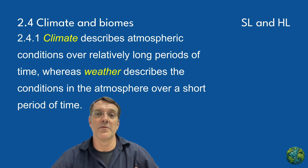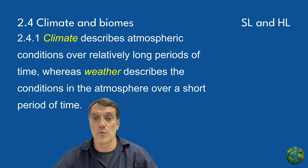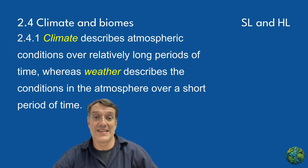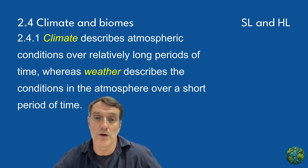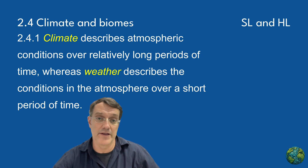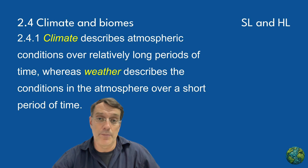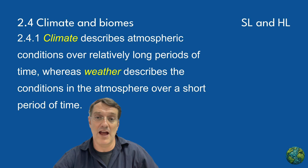Let's begin with a fundamental distinction in environmental systems: the difference between climate and weather. Climate describes the atmospheric conditions that are averaged over long periods, typically 30 years or more. Weather refers to the conditions at a particular moment or over a short period. Think of temperature, humidity, air pressure, and wind speed — these factors comprise both weather and climate, but on very different timescales.